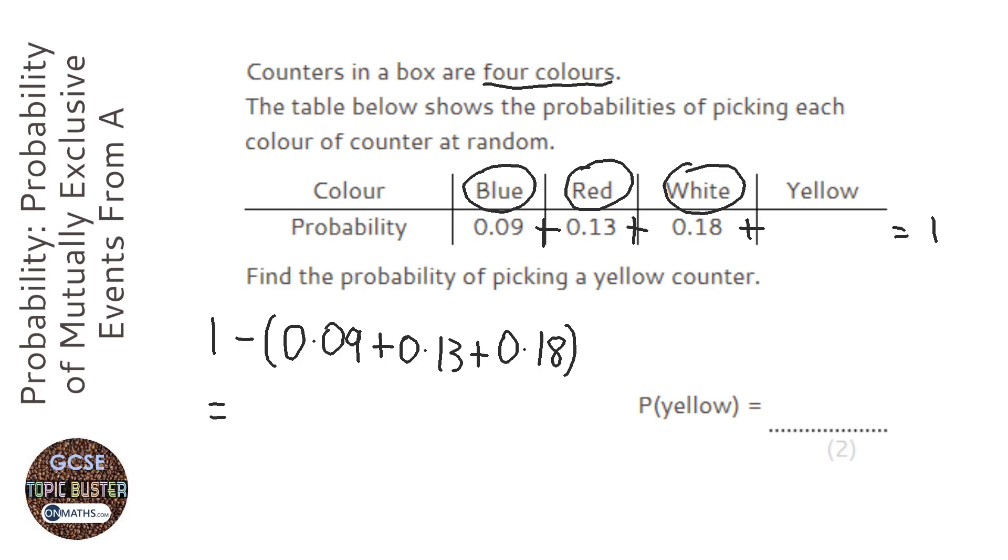So on the calculator, one take away brackets, 0.09 plus 0.13 plus 0.18, and that gives me the answer of 0.6.